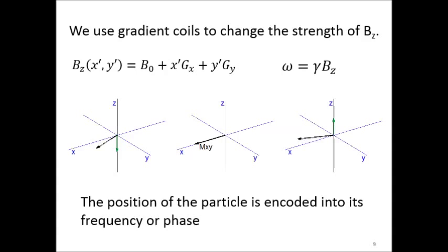We use gradient coils to change the strength of Bz, the z component of the external magnetic field. And we do so in a way that's spatially dependent, so that Bz is equal to B0 plus x prime, the particle's x location, times Gx, the value of the x gradient field. And when we do that, we get behaviors shown in this video. Particles on the right precess one way, particles on the left precess another. What we've done is we've encoded the position of the particle into its frequency.